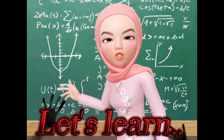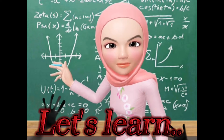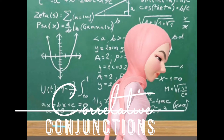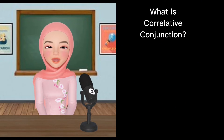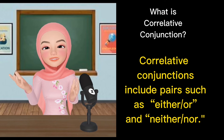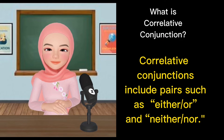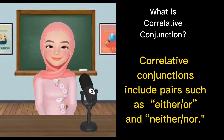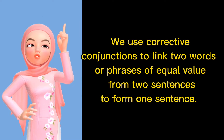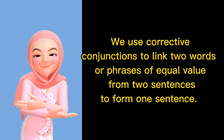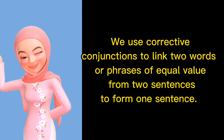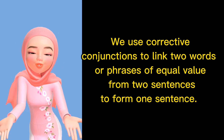Let's learn Correlative Conjunctions. What is a Correlative Conjunction? Correlative conjunctions include pairs such as either...or and neither...nor. We use correlative conjunctions to link two words or phrases of equal value from two sentences to form one sentence.